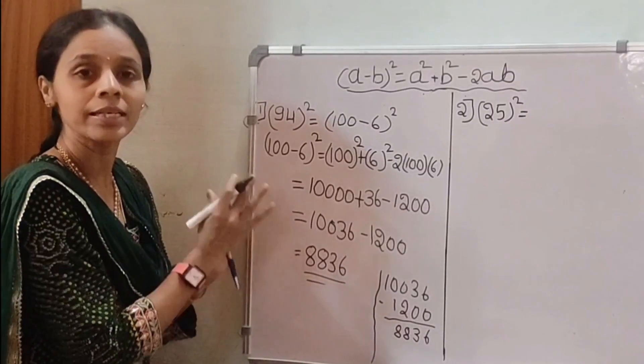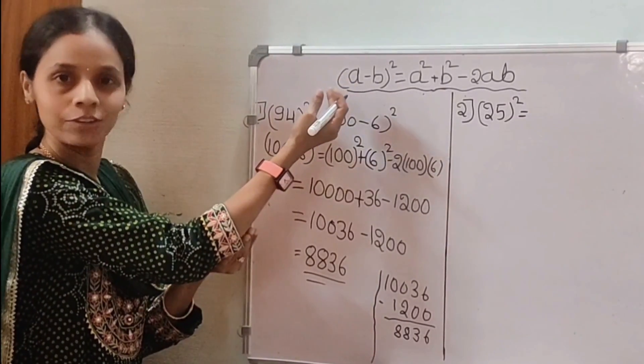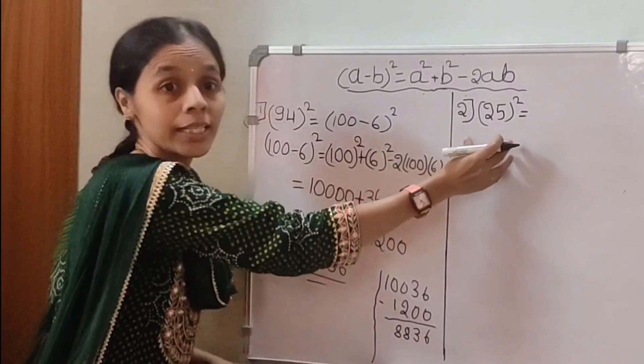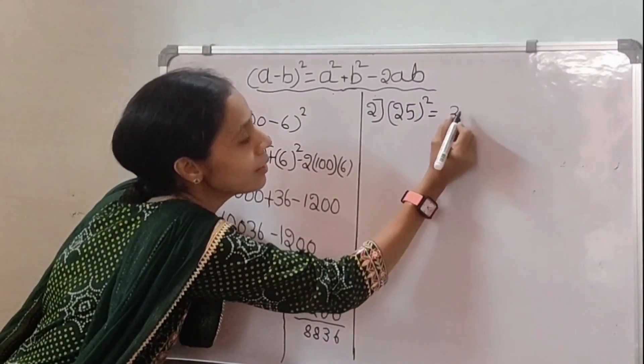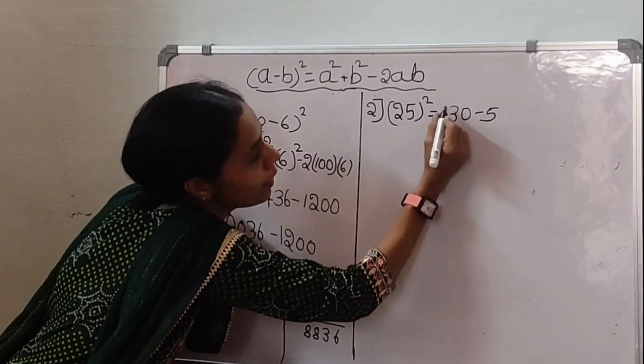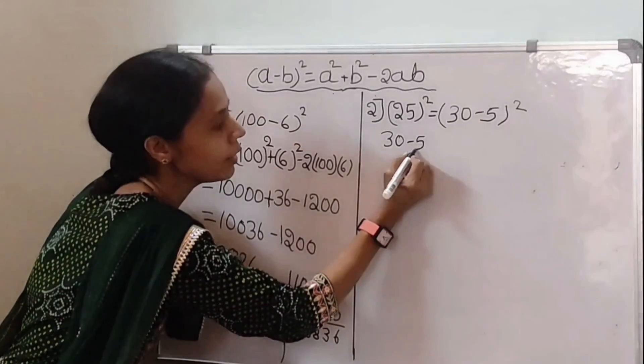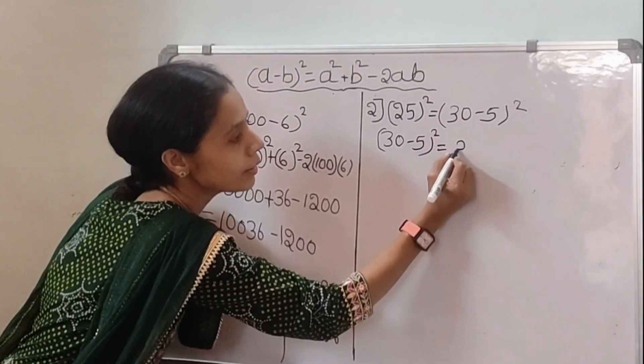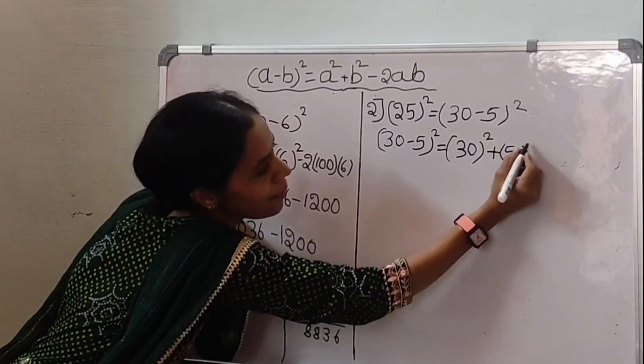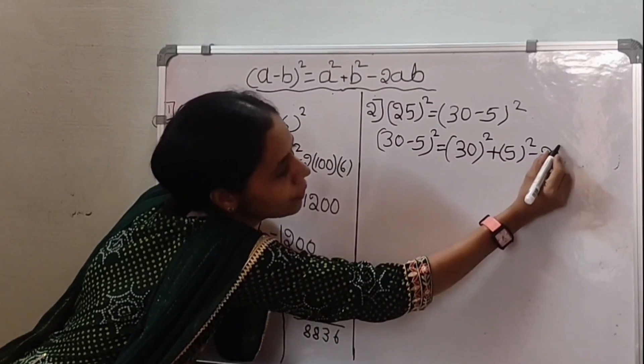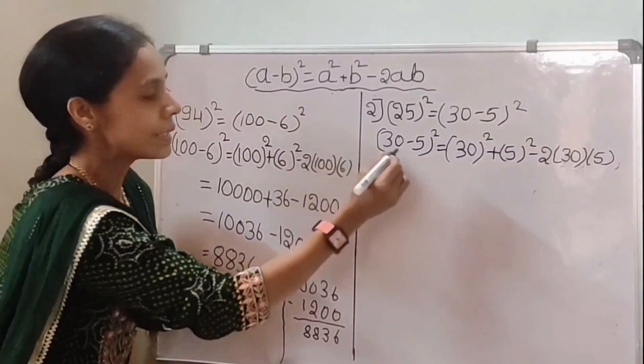We can find out the square of any number easily using (a + b)² formula or (a - b)² formula. Next, we consider another example. 25 is there. First, we write in (a - b)² form. So, 30 - 5 whole square.